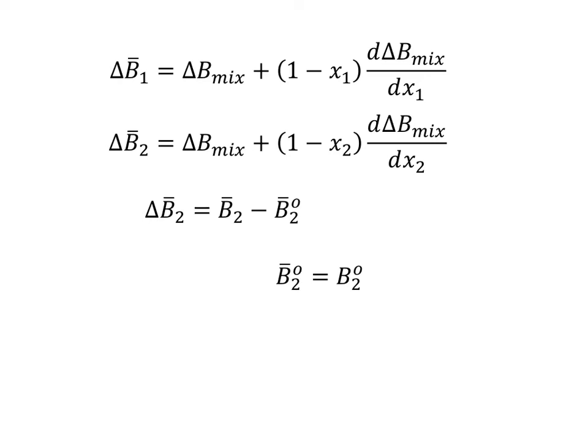In the last video, we learned how to find partial molar properties for mixing properties and derived the equation shown here. These are for general partial molar properties, which is why we are using the B, and we have an equation whether we're trying to find it for component 1 or component 2 in a two-component system.